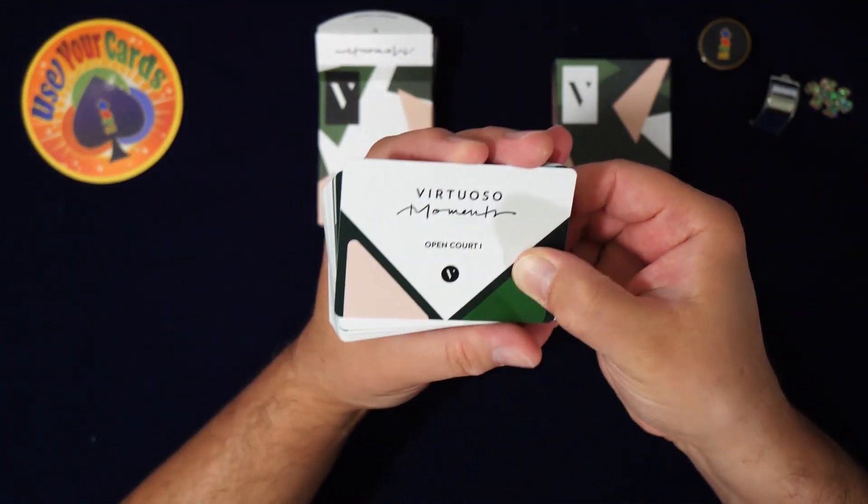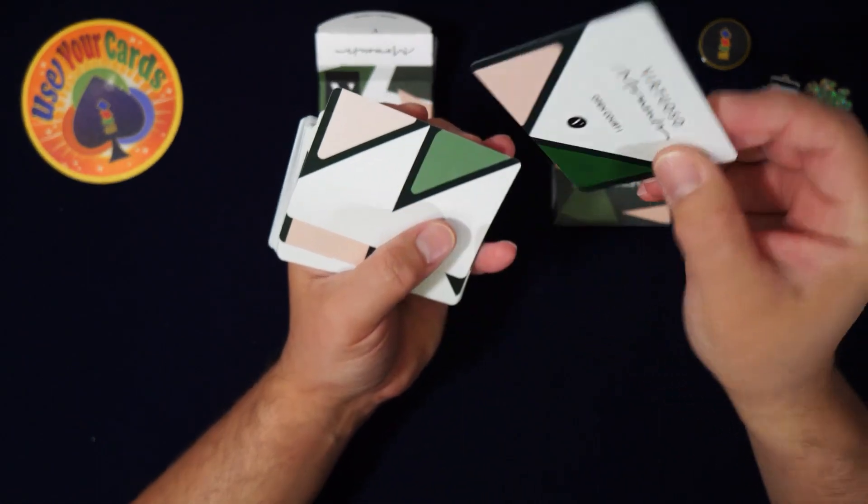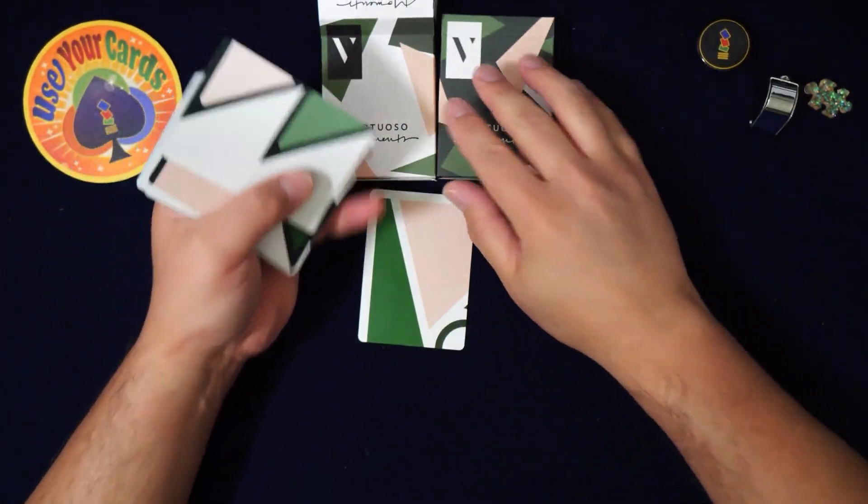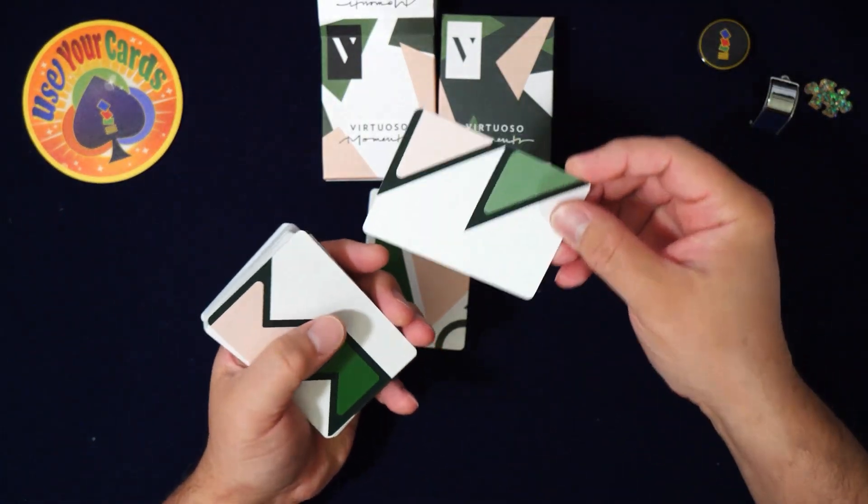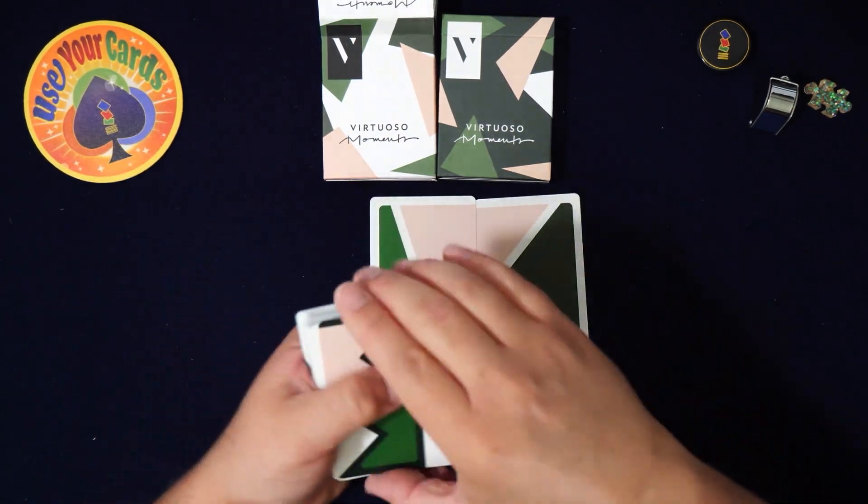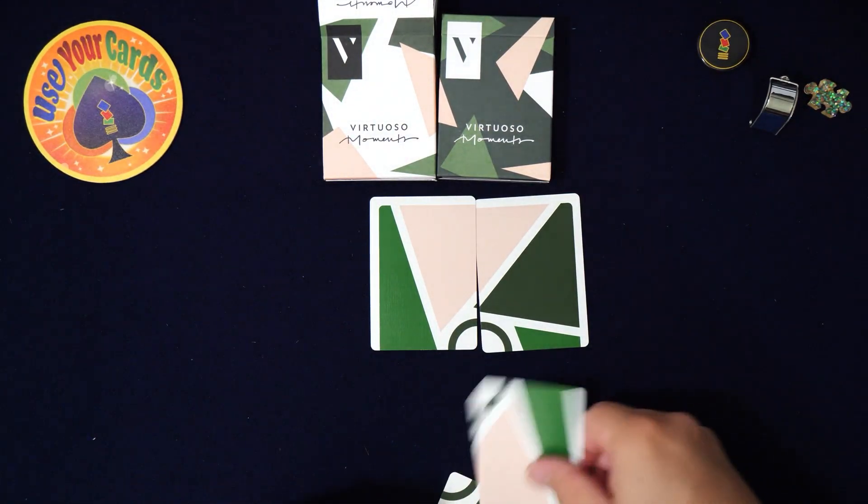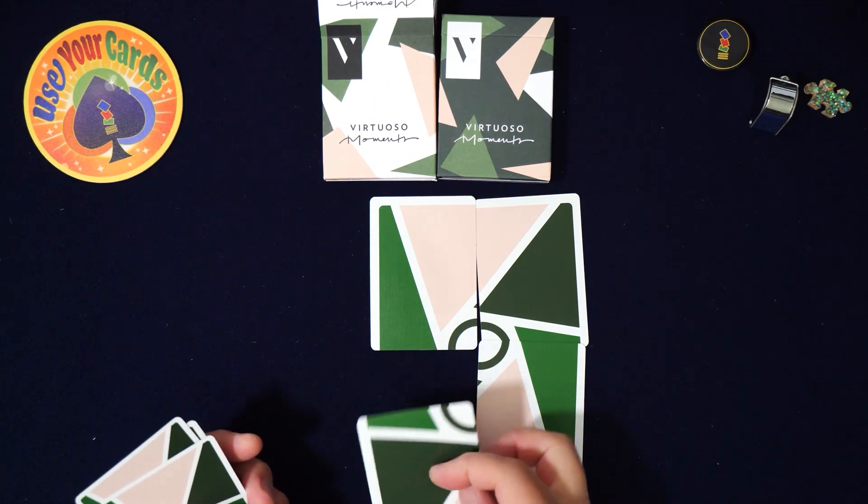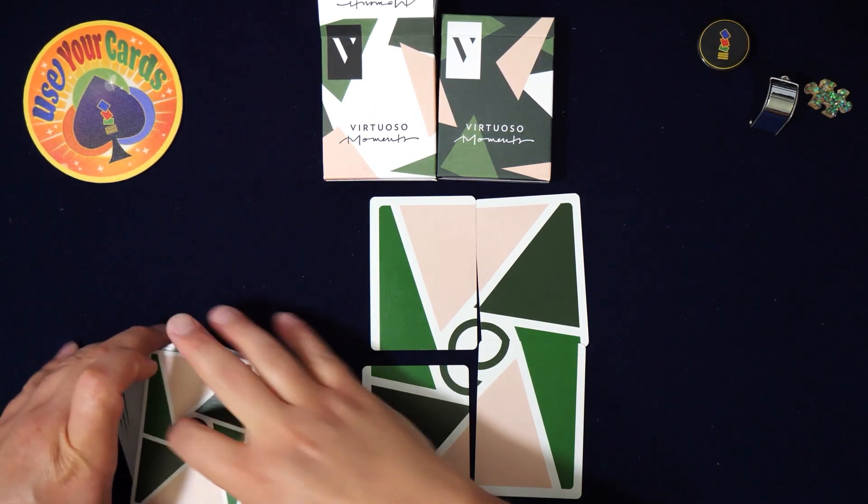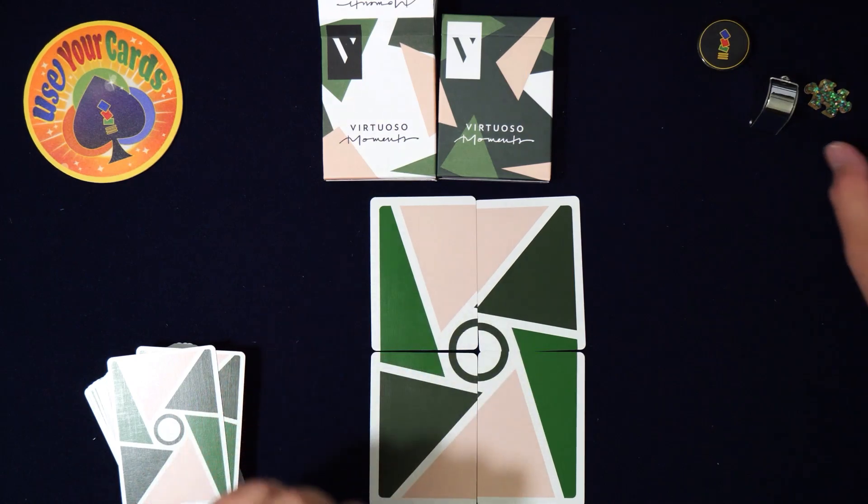So Virtuoso Moments, Open Court 1. Cool. Oh, so yeah, right. They always do the thing where you can build like a big card. So there's that. Let's do this.